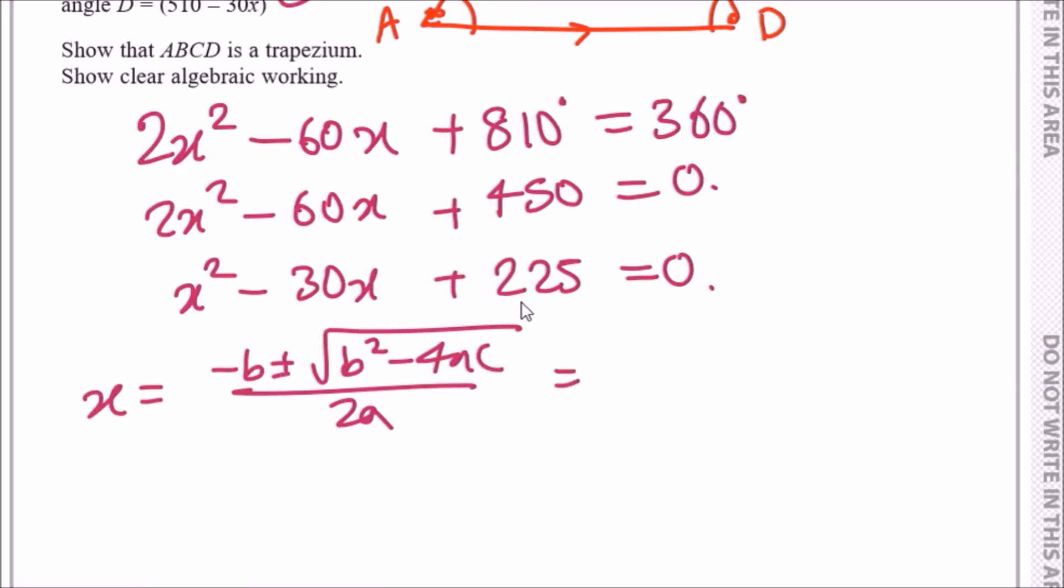Let's plug it all in. So minus b is plus 30, and 30 squared is 900 minus 4 times 1 times 225, which is also 900. So conveniently this part is zero all over 2 times 1.